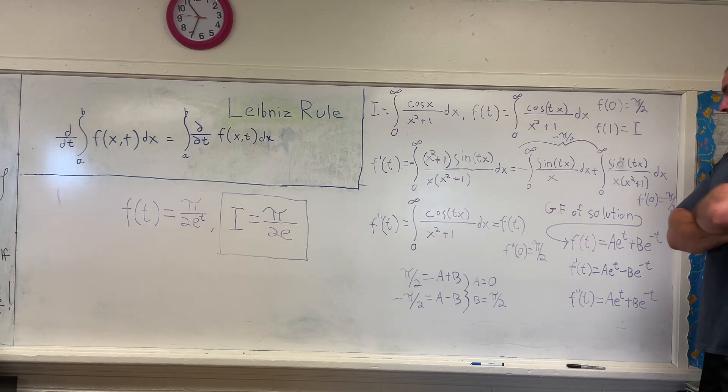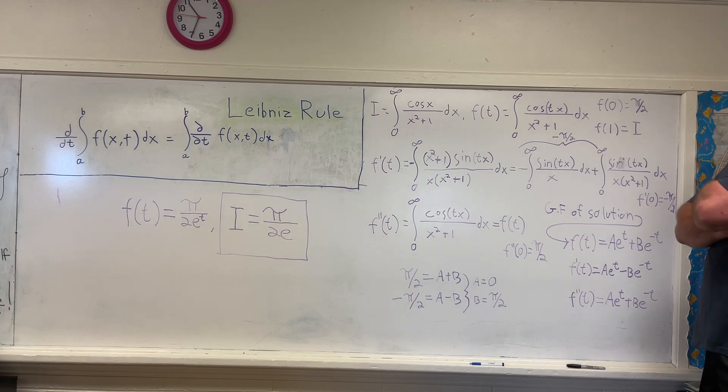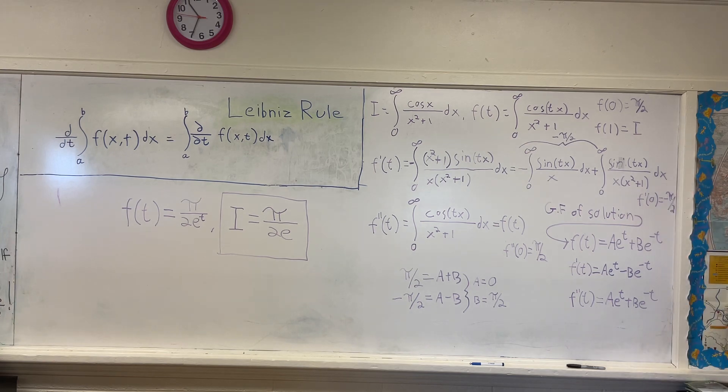So that gives us the equation that f double prime of t is equal to f of t. And that's why I stated at the beginning that it would be helpful if you knew a little bit about differential equations. So that's what's called a second order homogeneous differential equation with constant coefficients. And it's not even a very difficult one. I'm not going to show why you get the general solution for that differential equation that you do. There's plenty of videos online about that. I recommend Khan Academy to learn about differential equations.